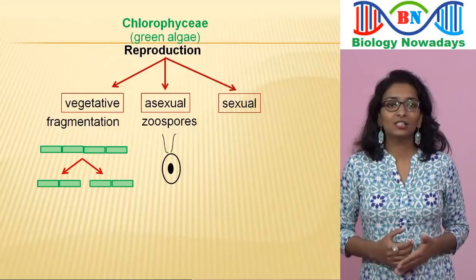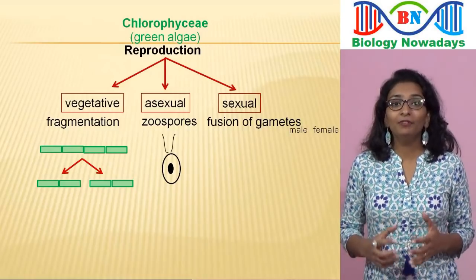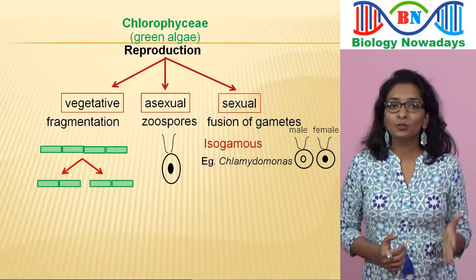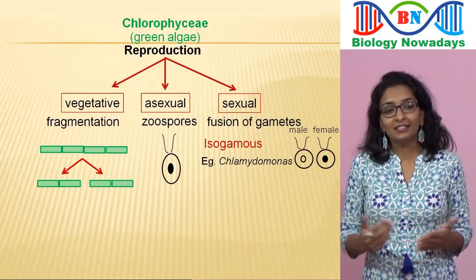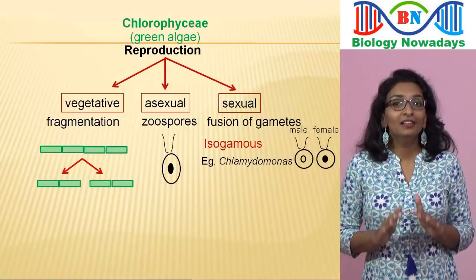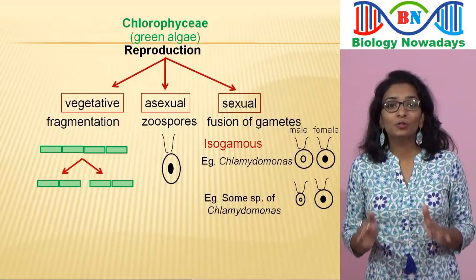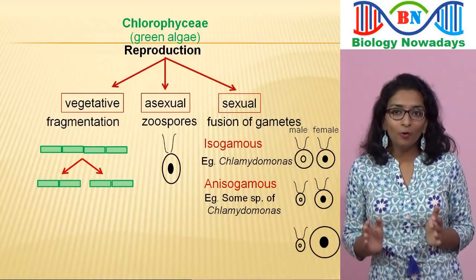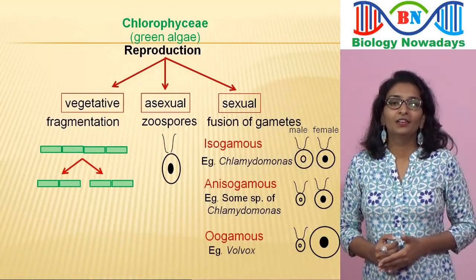Sexual reproduction takes place through fusion of two gametes — the male gamete and the female gamete. These gametes can be flagellated and similar in size, as in Chlamydomonas; such reproduction is called isogamous. Sometimes the gametes are non-flagellated and non-motile but still similar in size, for example in Spirogyra. If the two gametes are dissimilar in size, as in some species of Chlamydomonas, it is termed anisogamous. If the fusion is between one large non-motile female gamete and a smaller motile male gamete, then it is termed oogamous.